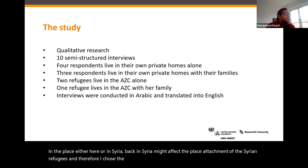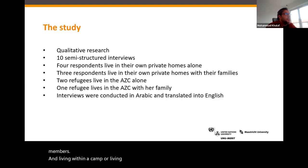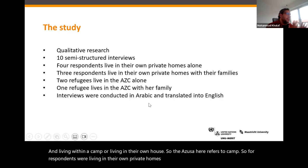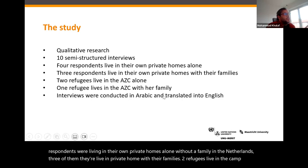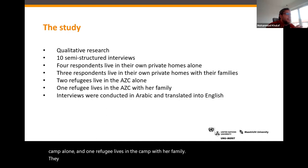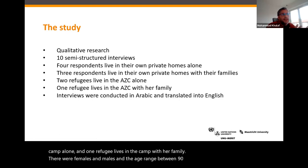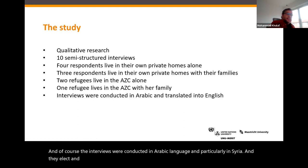I chose the group to include those living with family members and those living without family members, and those living within a camp or in their own house. Four respondents were living in their own private homes alone without family in the Netherlands. Three lived in private homes with their families, two lived in the camp alone, and one lived in the camp with their family. The age range was between 19 years old and the late 30s, and the interviews were conducted in Arabic, particularly in Syrian dialect, and translated directly to English.